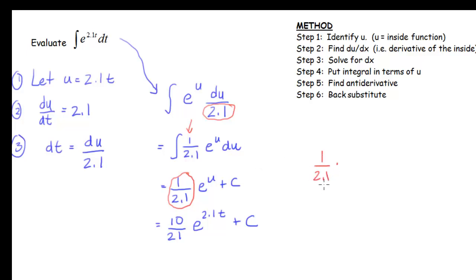So one easy way to do that is to take 1/2.1. I want to make this denominator be a whole number so I need to multiply by 10. So I get 10/21. And then if I could reduce this I would want to go ahead and do that. So I have (10/21)e^(2.1t) + C if I back substitute. And then the last thing you would do is just check.